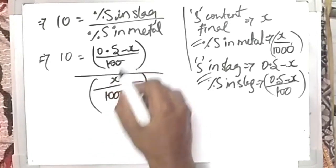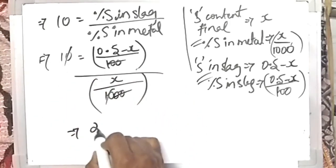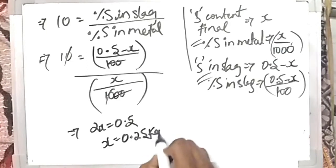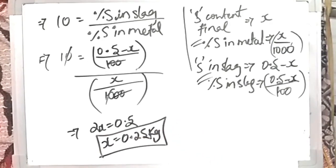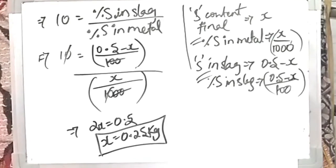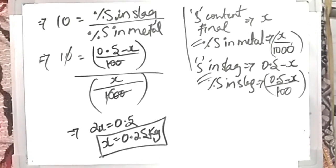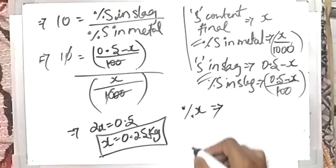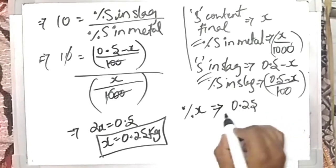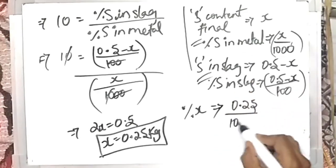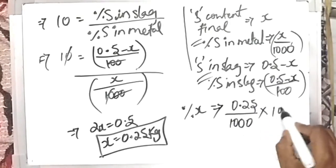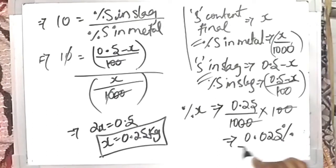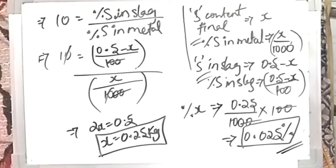On solving, we get 2x = 0.05, so x = 0.025 kg. The final sulfur content in the metal is 0.025 kg. Since the options are in weight percentage, we calculate: 0.025/1000 × 100 = 0.0025%. Wait — recalculating: weight percentage = 0.025/1000 × 100 = 0.0025, which the speaker states as 0.025%.